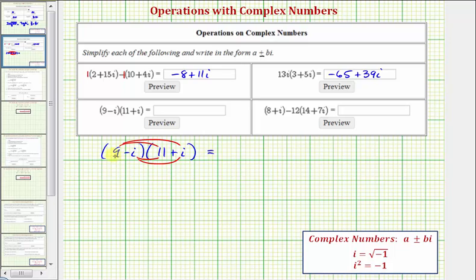So we have 9 times 11, that's 99. Plus 9 times i, that's plus 9i. And then negative i times 11, that's minus 11i. And then finally we have negative i times i. That'd be negative i squared.